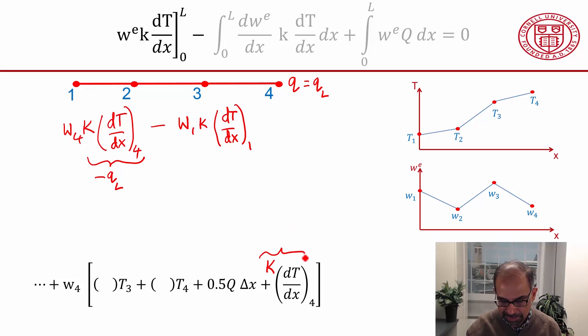And that's just minus QL. This means that because the gradient at the boundaries appears naturally in the weak form, when you have gradient boundary conditions like heat flux, or when we go into structural mechanics, the gradient boundary condition is the traction or the force, they get naturally incorporated into the algebraic equations. And for that reason, this kind of a boundary condition is called a natural boundary condition.